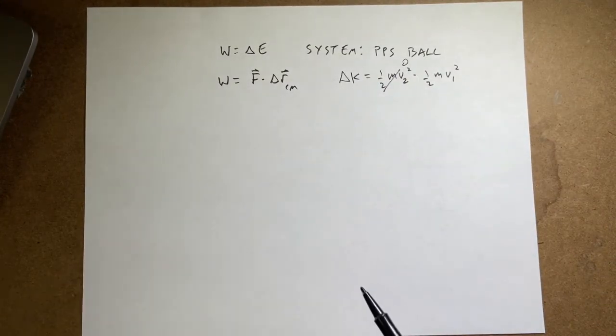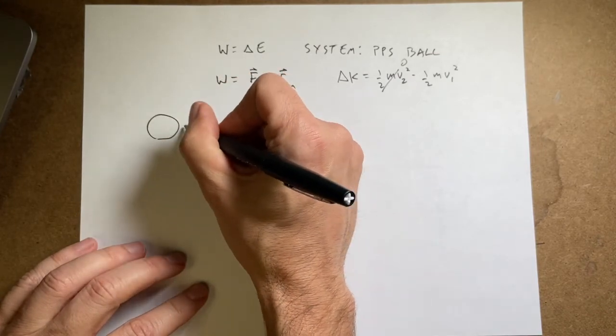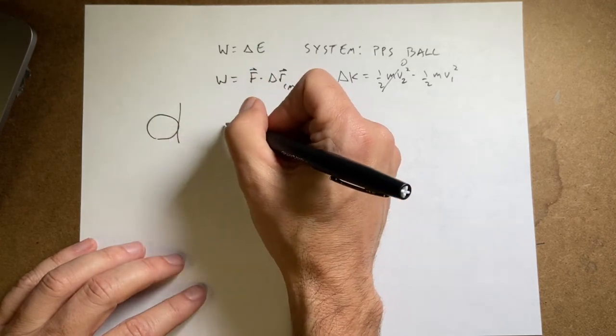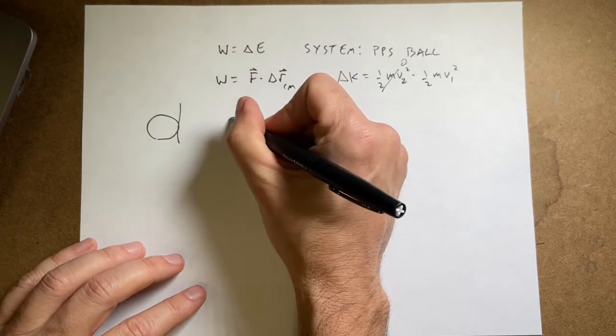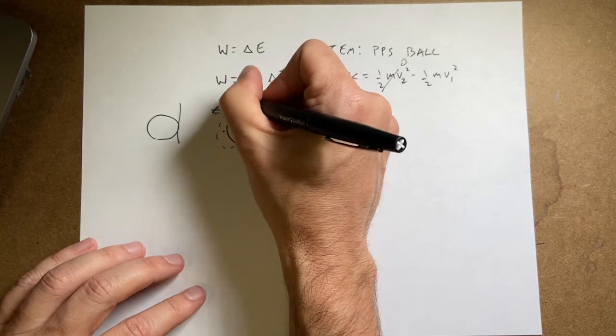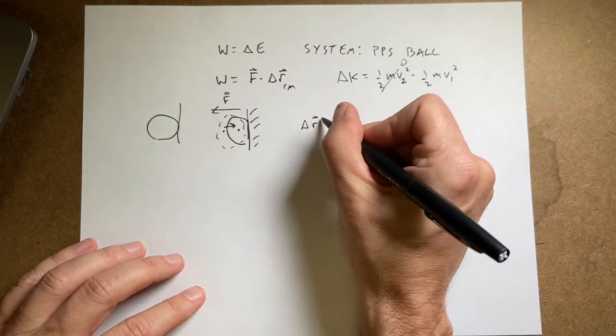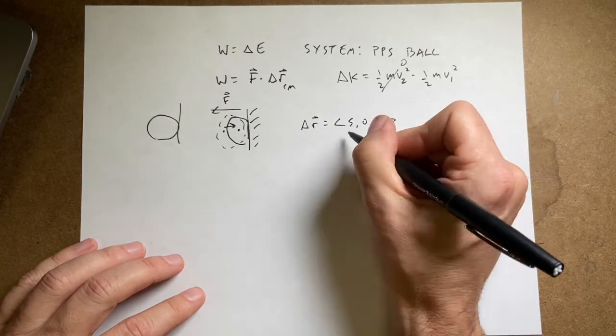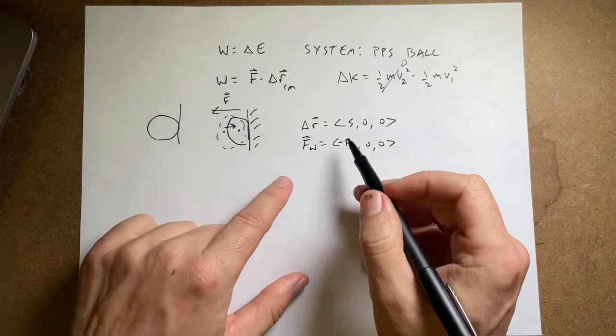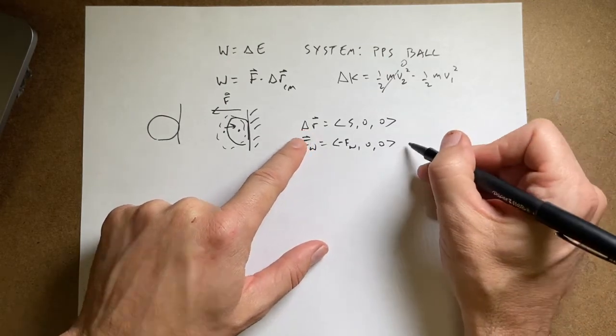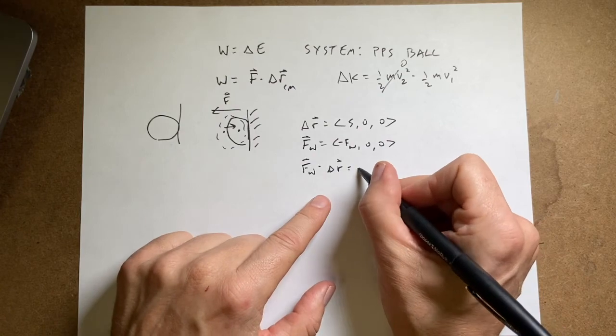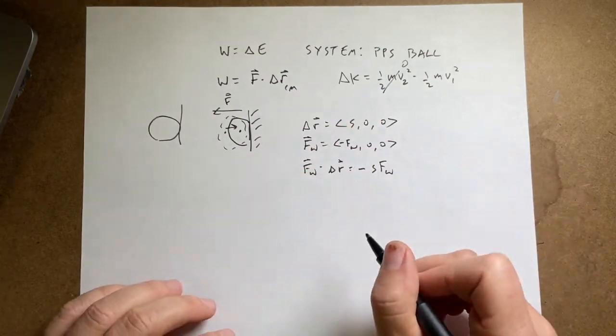So what's the work done on the point particle system? Well, in this case, I have the ball going from here. Let's draw the squishy ball. Squished. And then the other ball. There's the center mass. F is that way. Delta r is this way. Delta r is going to be the vector s, zero, zero. F wall is going to be the vector negative f wall, zero, zero. So f dot delta r, fw dot delta r is going to be equal to the x components multiplied by each other, negative s times f, plus zero, plus zero. That's how you do the dot product.